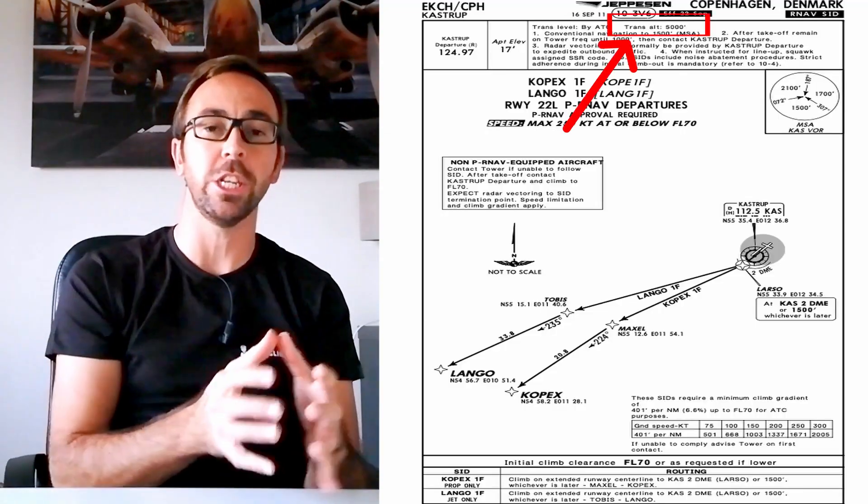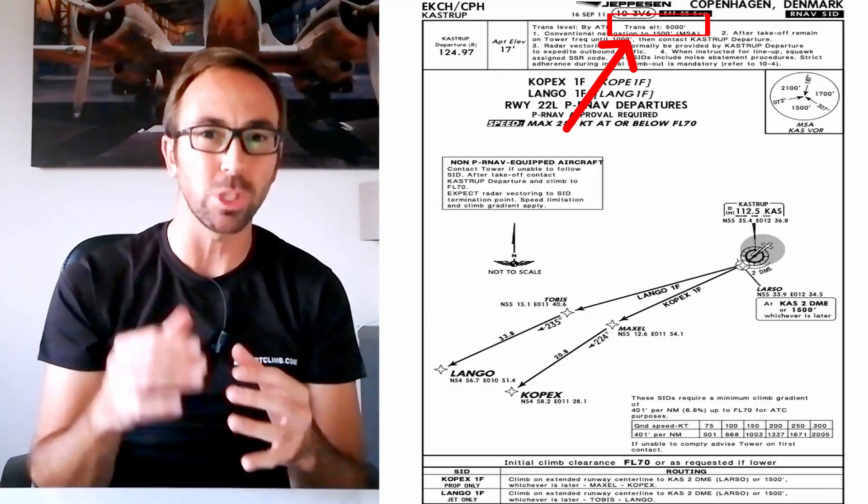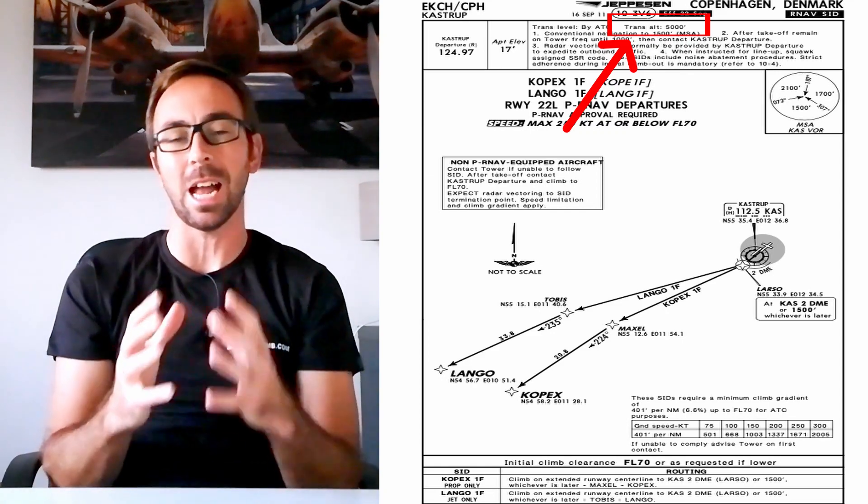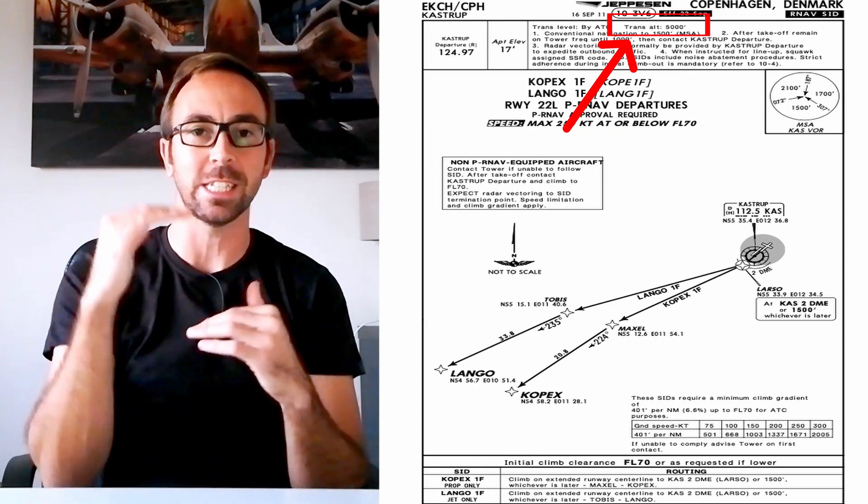Who gives you the transition level? The air traffic controller will provide you with the transition level. When you are descending, the ATC will inform you — for example, that the transition level is Flight Level 90. You can also get the transition level by listening to the ATIS, where you'll find meteorological information including the transition level. The transition altitude, however, is found in the charts — since it references mean sea level, it's a fixed, standard value. The transition level, by contrast, is not a fixed value.